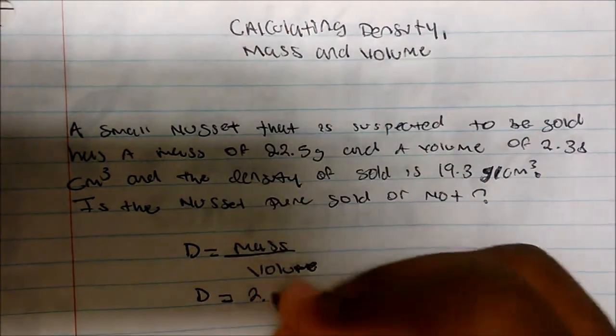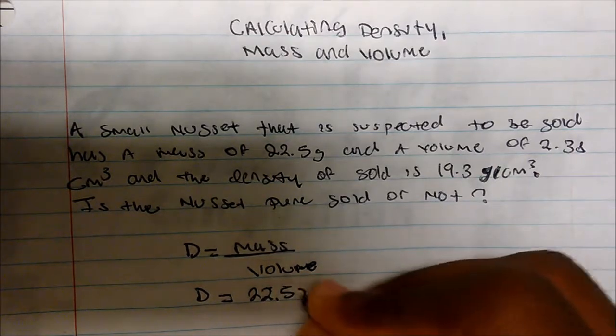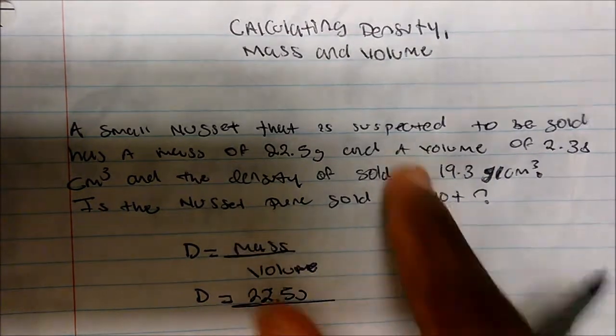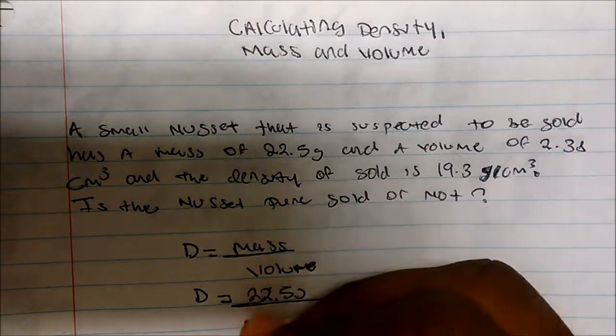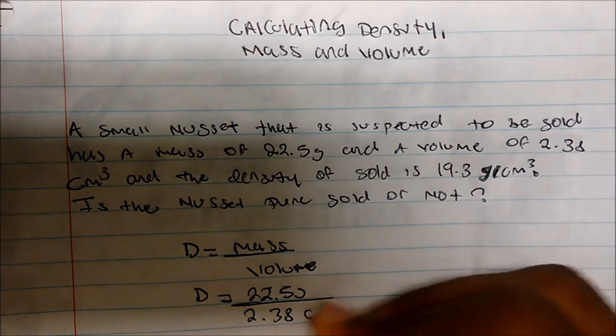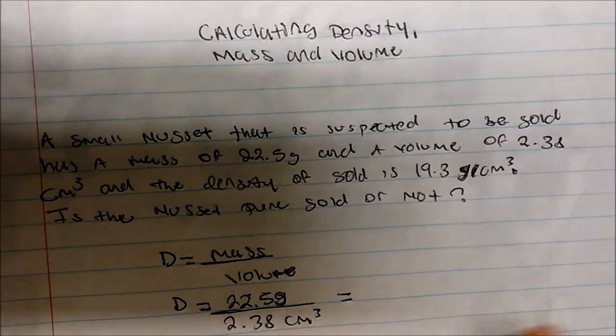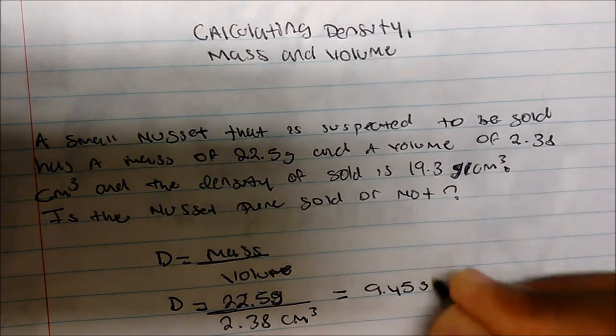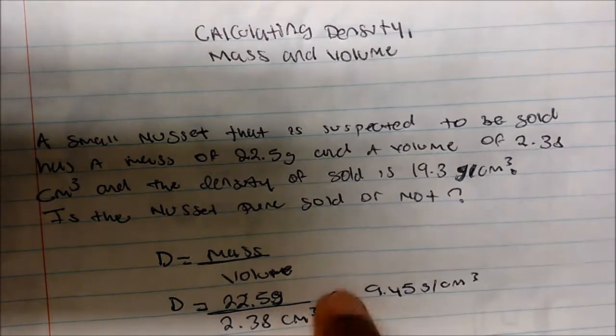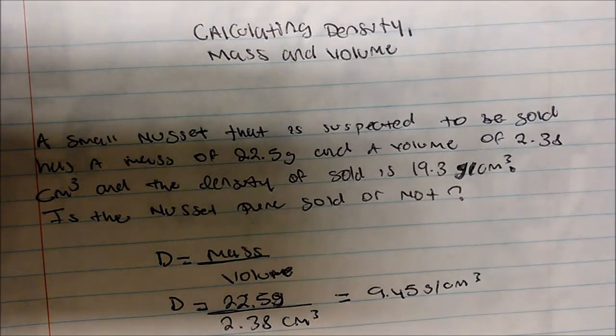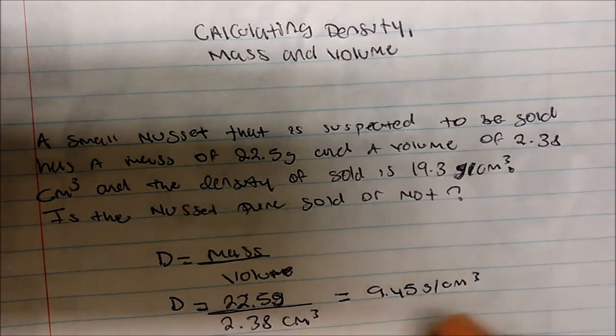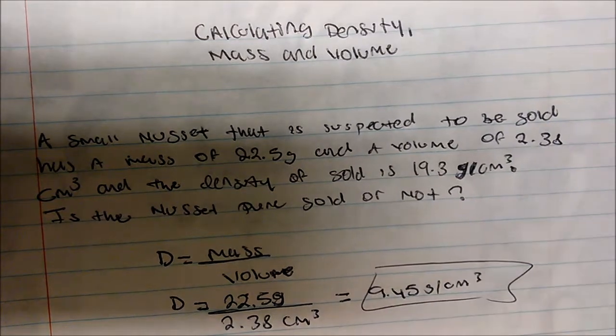Well, then we know the mass would be 22.5 grams. And we know the volume to be 2.38 cubic centimeters. And so if I divide these two numbers, I should get around 9.45 grams per cubic centimeter. So we can confirm that the actual stuff is not gold. Okay, and so this is how we're going to calculate the density.